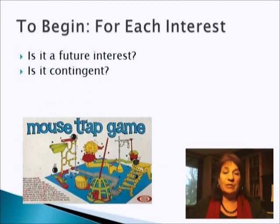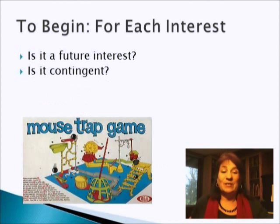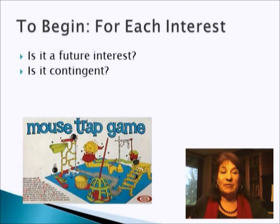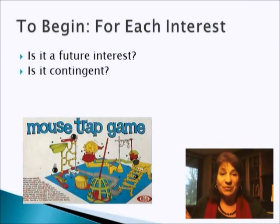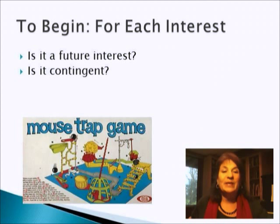So to begin with, first, this rule only applies if we have a future interest and it's a contingent interest. So ask yourself: first of all, is this a future interest? And then ask, is it contingent?